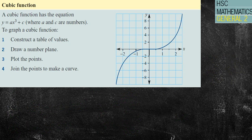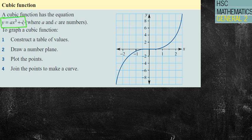So we have our cubic graph. A cubic function has the equation y equals ax cubed plus c. The x cubed is the cubic part, which makes it a cubic function. The plus c just affects the y-intercept, just like you've had previously. So first of all, construct the table of values, draw your number plane, plot your points and join the points to make the curve.